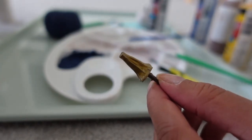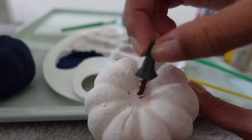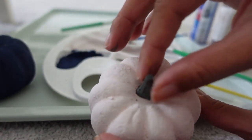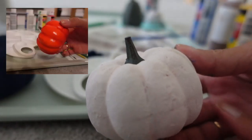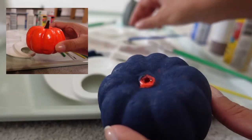Alright so there you have it, the last stem is done. Now that everything is dried I'm going to put it together so you can see the final result. I think it looks absolutely great together. Here's a little before and after just so you remember what the actual pumpkin looked like before we painted it.